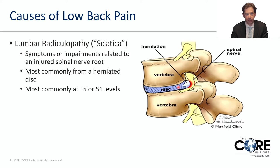The next topic is lumbar radiculopathy, commonly known as sciatica. This means the nerves coming out of the spinal canal are being irritated, commonly from herniations of the discs which compress on the nerves and cause pain into the legs. The most common segments are the bottom two, L4-5 and L5-S1. When there is a disc herniation, it tends to go to one side or the other and can press on the nerve root, causing pain, weakness, and numbness down into the legs.